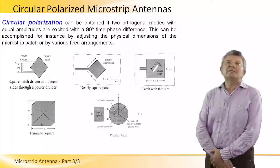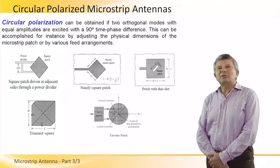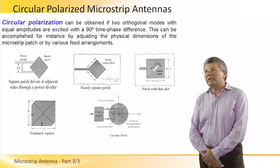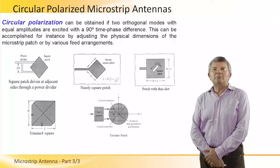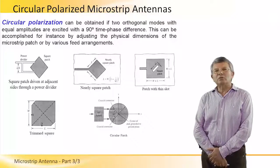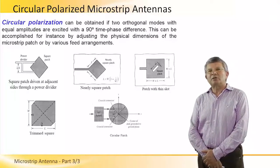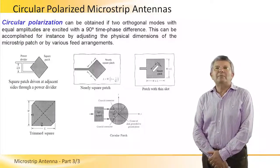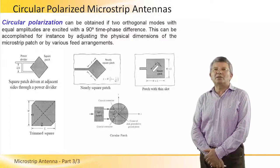So far, we discussed microstrip — rectangular patch, circular patch, in both two models. But in all models discussed so far, the polarization of the microstrip antenna is linear. However, with a microstrip antenna, we can also obtain circular polarization.